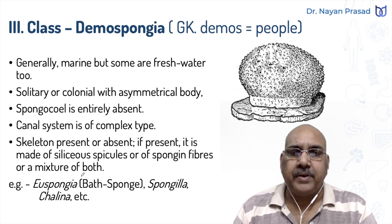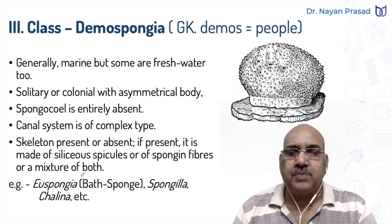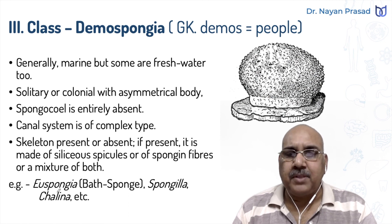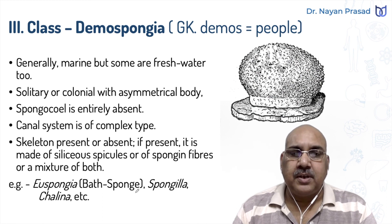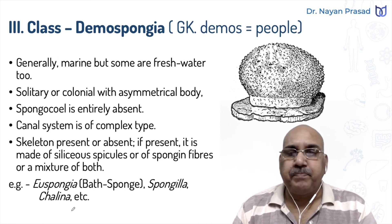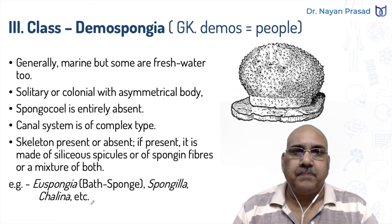Different conditions are found in these members. Common examples are Euspongia, the bath sponge, Spongilla, the freshwater species, Cliona, etc.